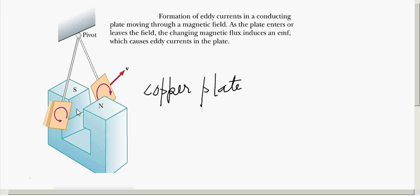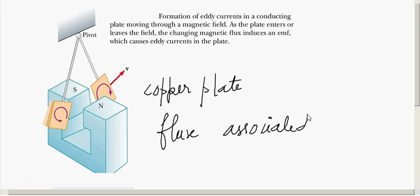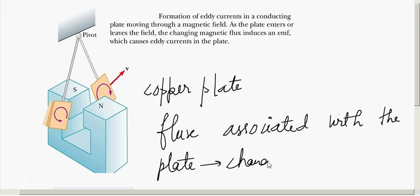When the copper plate goes into the magnetic field, the flux linking the plate increases. When it goes out of the magnetic field, the flux linking the copper plate reduces. So the magnetic flux associated with the plate keeps on changing as it moves into and out of the field.